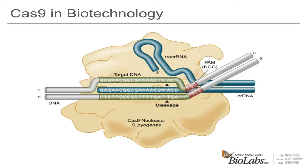One is the CRISPR-RNA or crRNA, and it contains the target sequence information that is complementary to the site that is to be cut. The second is the tracer RNA, or transactivating CRISPR-RNA, which binds to the crRNA and is also responsible for binding to the Cas9 protein. Another feature of this system is the protospacer adjacent motif, or the PAM site. A PAM site just downstream of your target is necessary for cleavage by Cas9. For S. pyogenes Cas9, the PAM sequence is NGG, and the cut occurs three bases upstream.